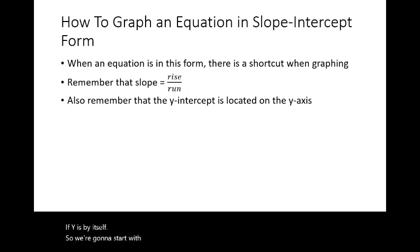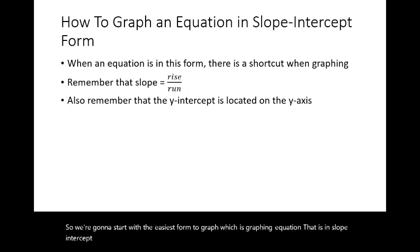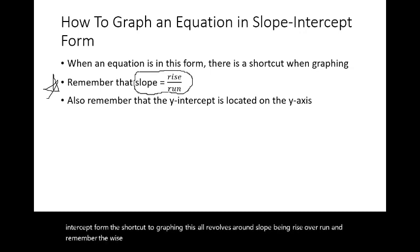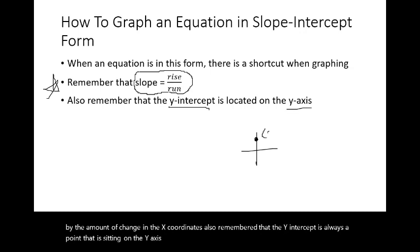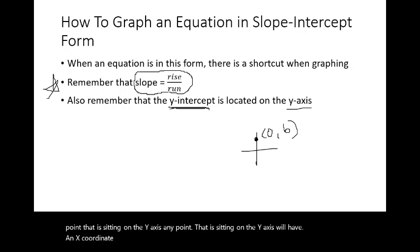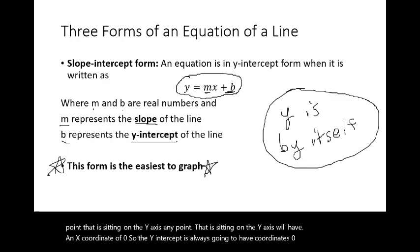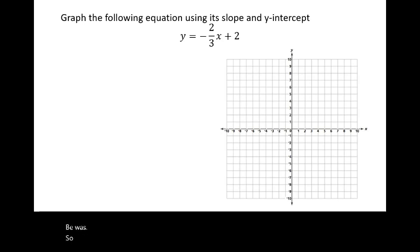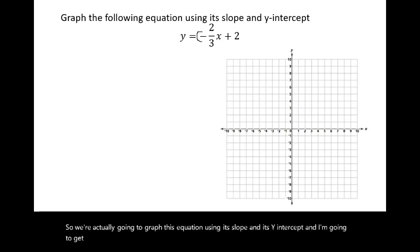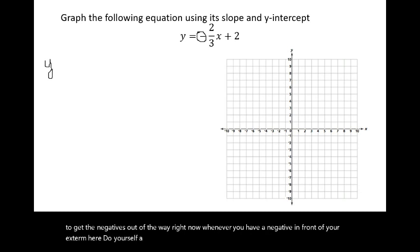We'll start with the easiest form to graph: equations in slope-intercept form. The shortcut revolves around slope being rise over run — the y's rise. Slope equals the change in y-coordinates divided by the change in x-coordinates. Also remember that the y-intercept is always a point on the y-axis, so it always has coordinates (0, b). Whenever you have a negative in front of the x-term, put that negative sign with the numerator.